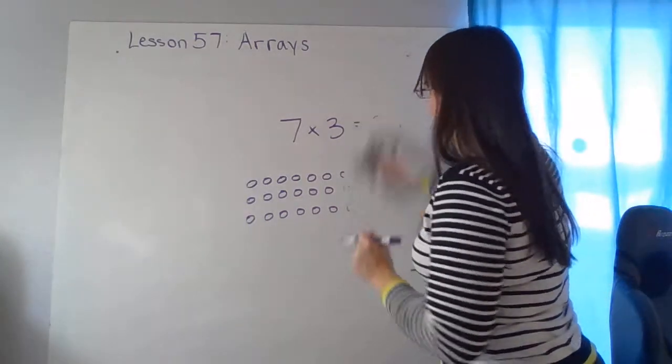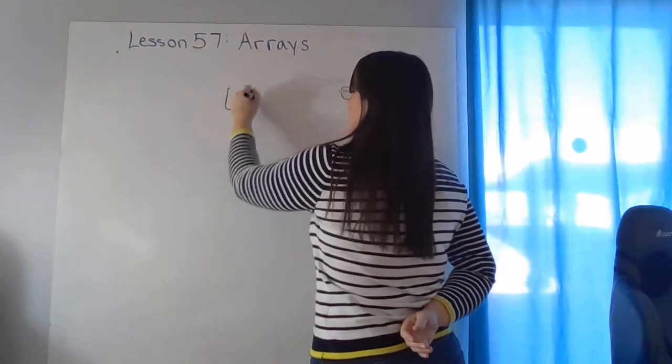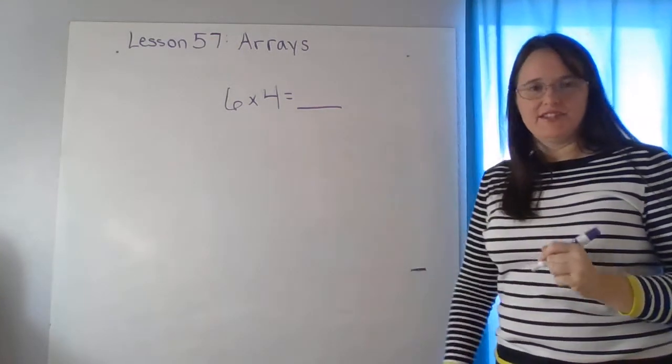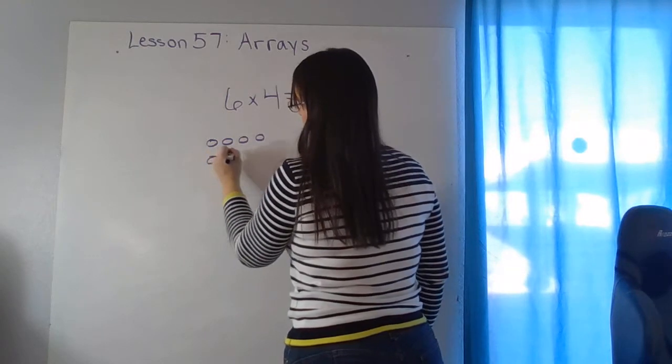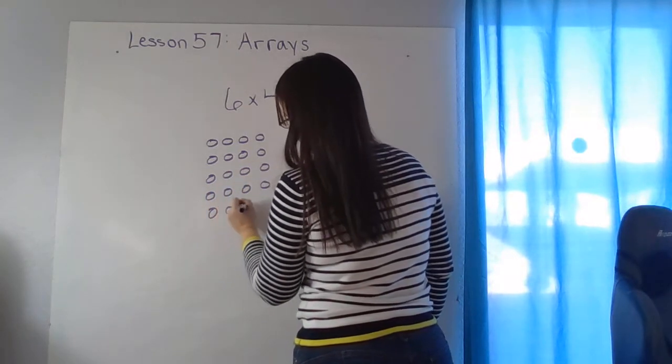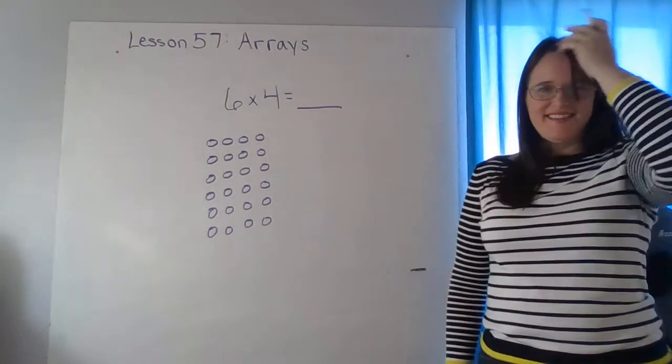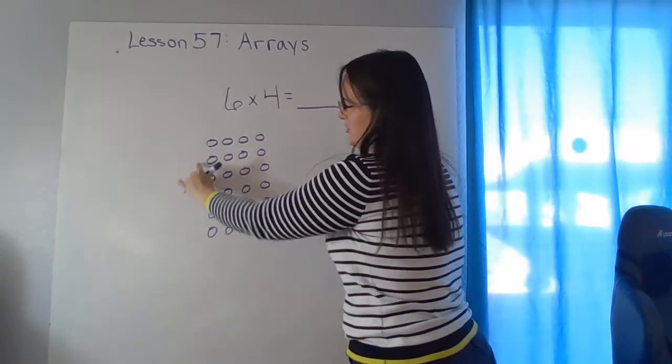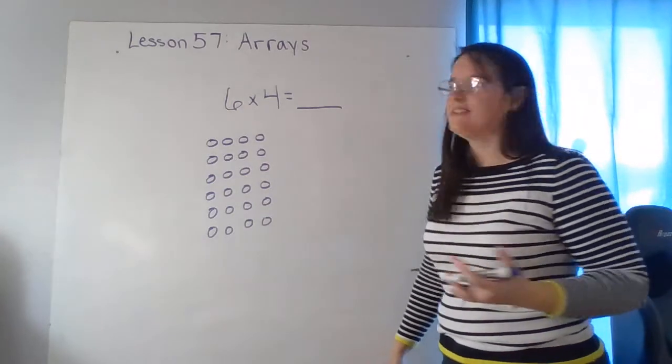Okay, I have one more that you're going to try with me and then you'll go move on to the lesson practice. So our last problem is six times four. Show me an array and then write down the whole problem including the answer. Six times four. Did you see me counting to make sure I had the right number of rows? I knew I was doing four across. Then I had to go one, two, three, four, five, six. I've got them all. Here's my six times four array and now I have to figure out the answer.